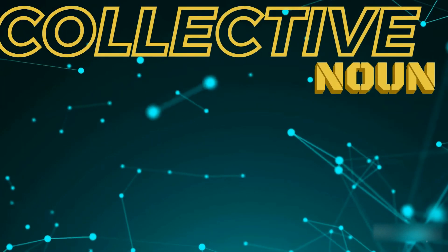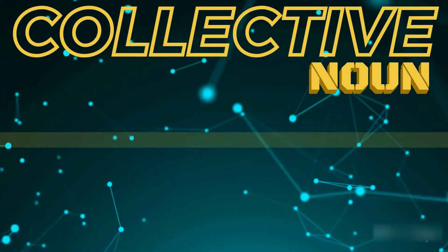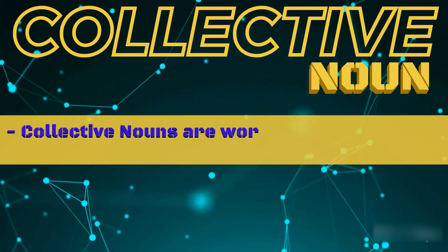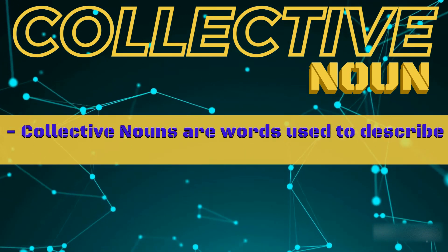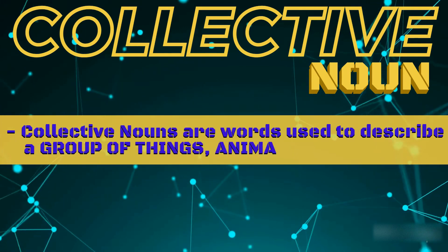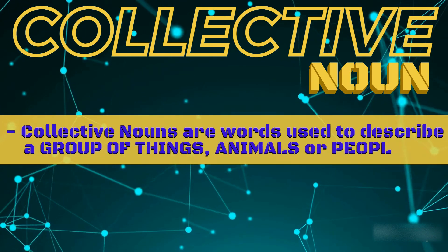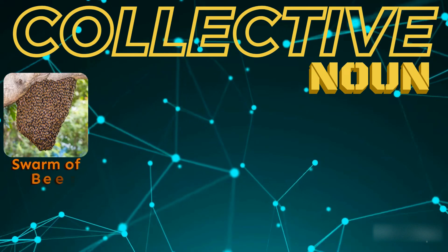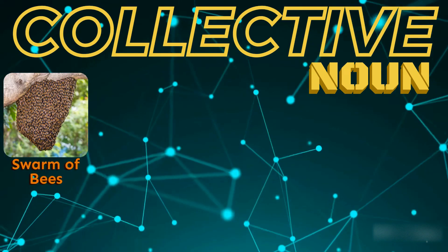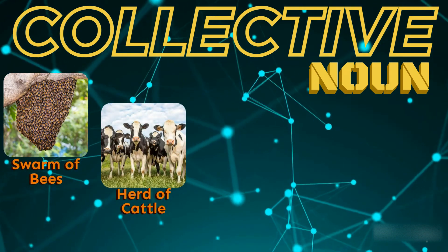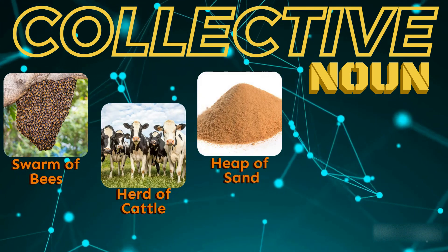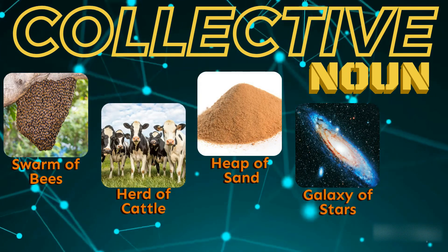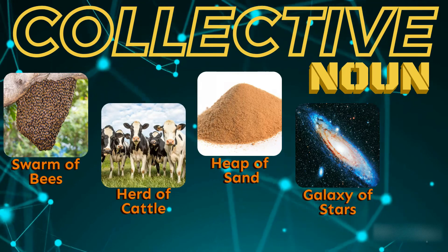What is a collective noun? Collective nouns are the words used to describe a group of things, animals or people. Swarm of bees, herd of cattle, heap of sand, galaxy of stars are examples of collective noun.